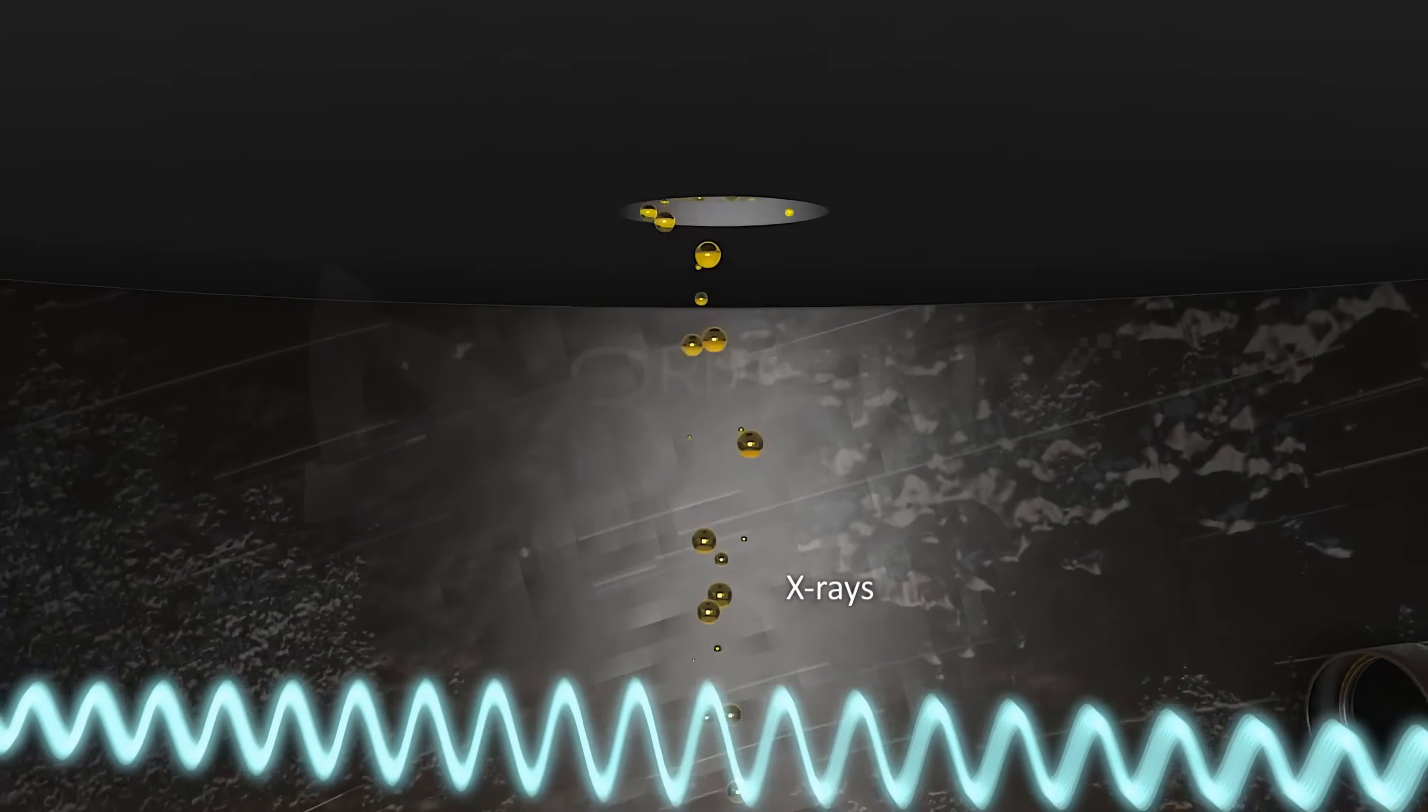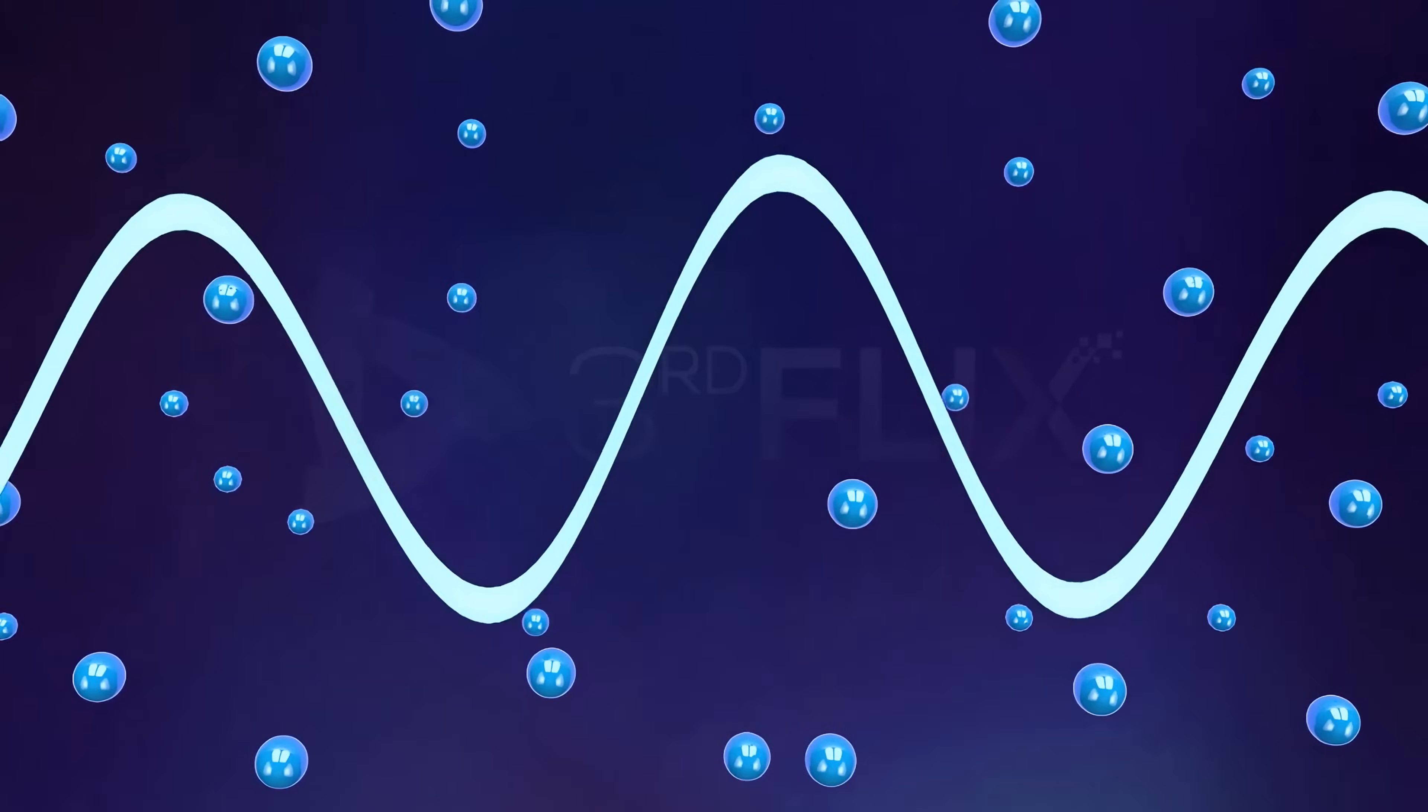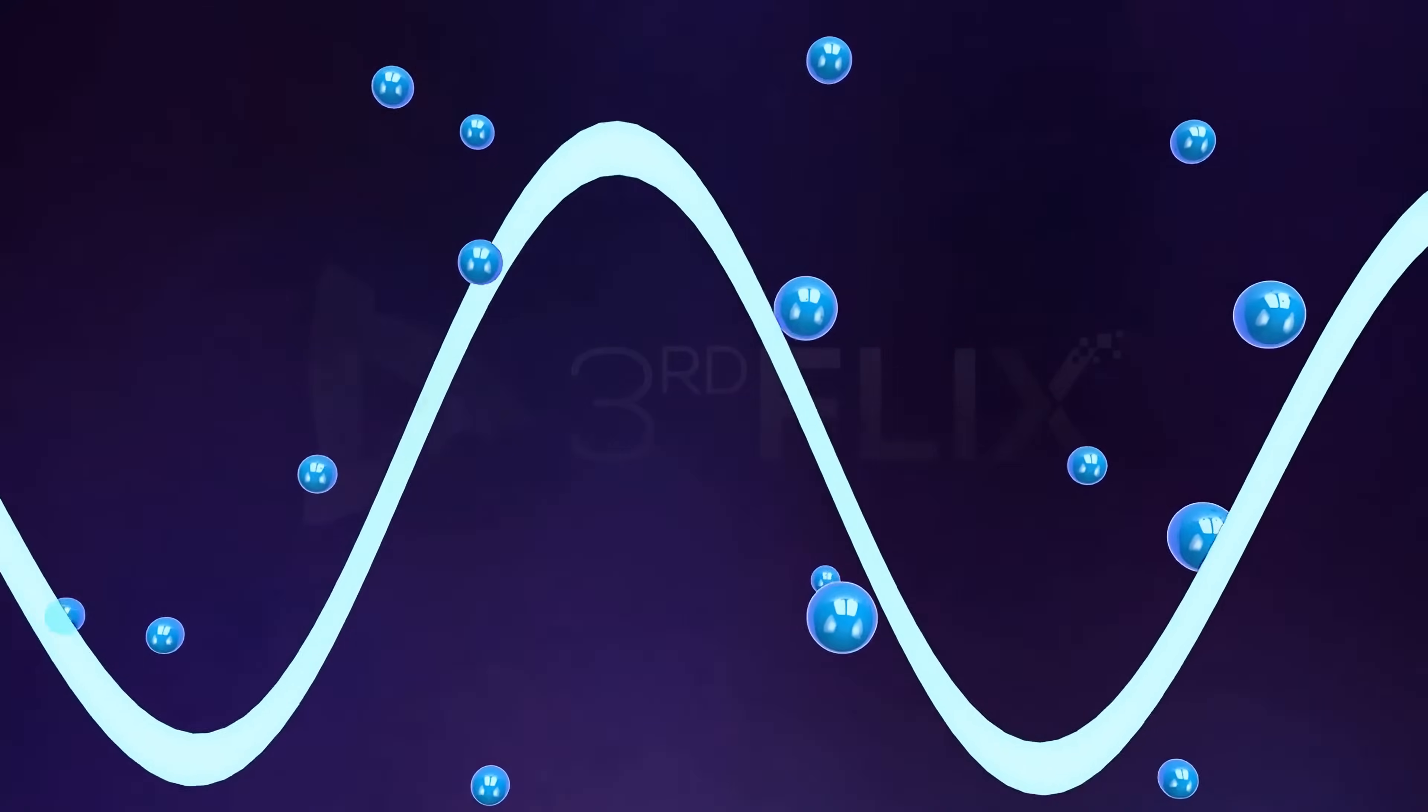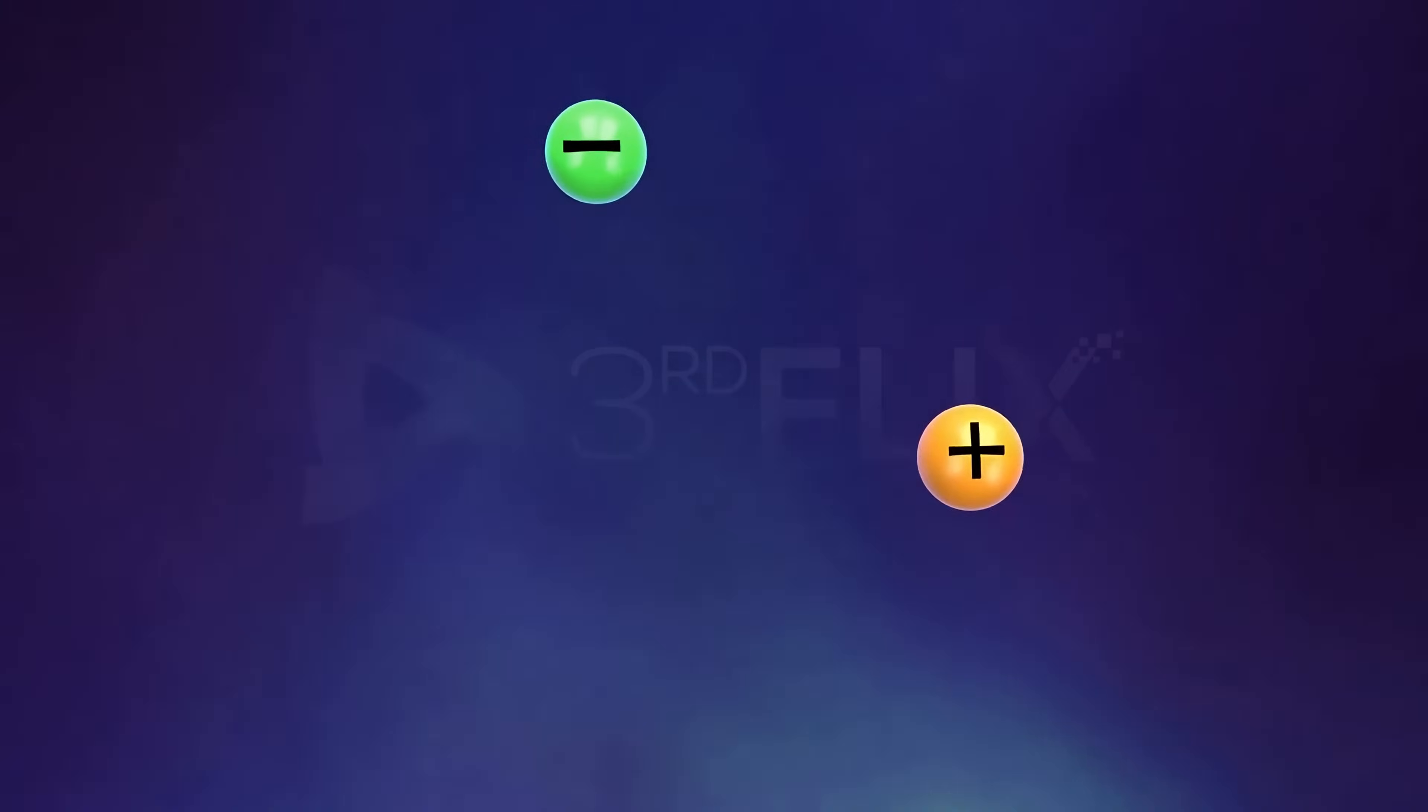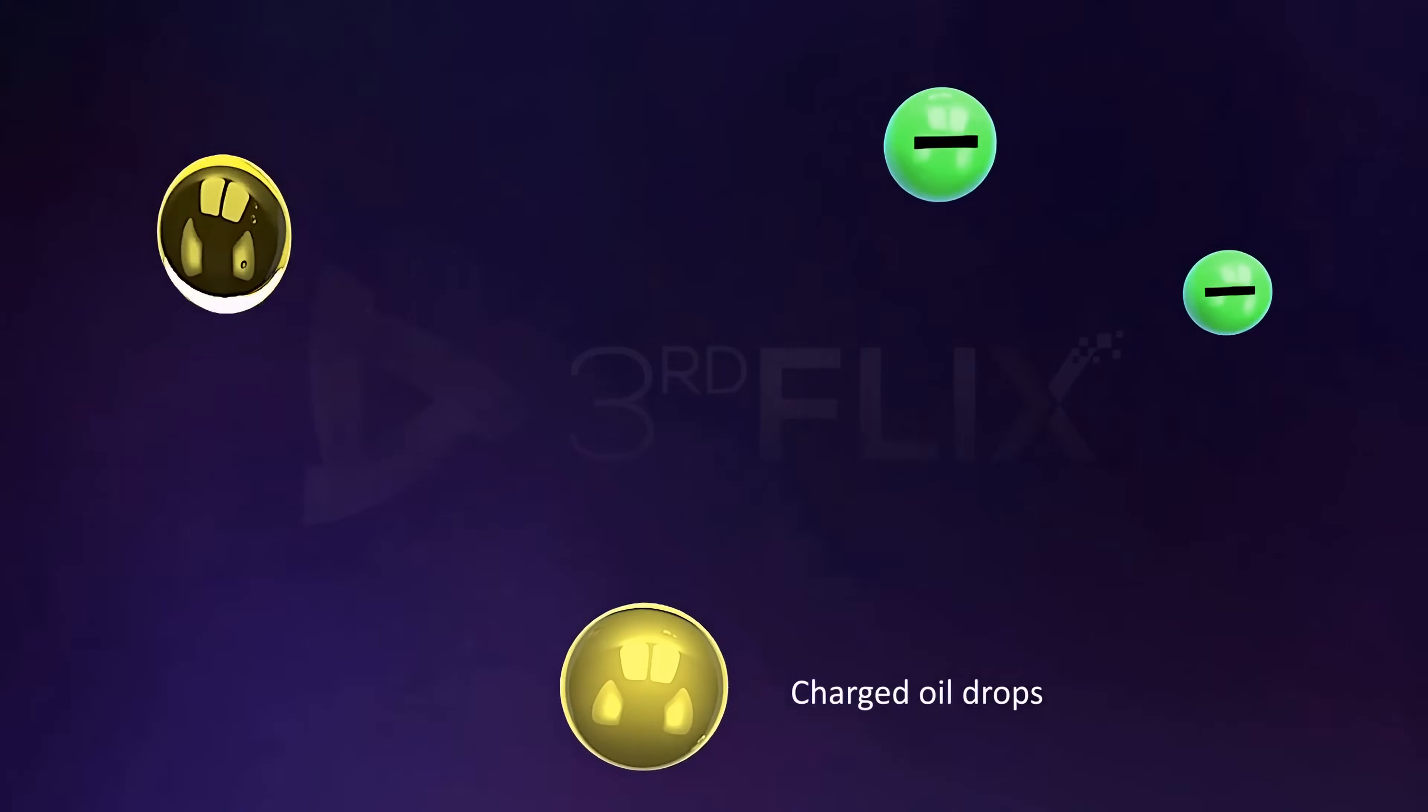Next, by passing a beam of x-rays between the two plates in the condenser, the air molecules inside the condenser were ionized. The x-rays caused the displacement of electrons from the air molecules. The displaced electrons then attached themselves to the falling oil droplets, resulting in a negative charge on the droplets.